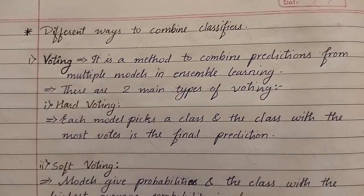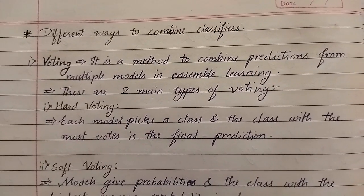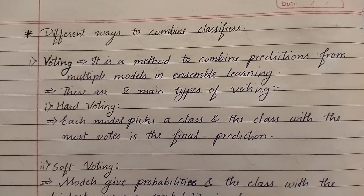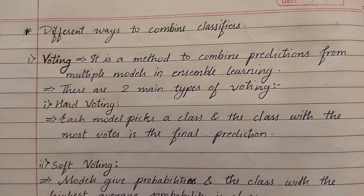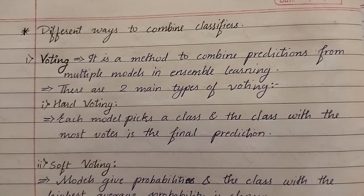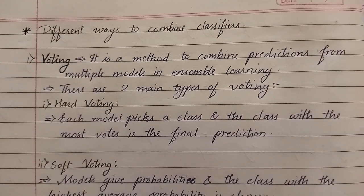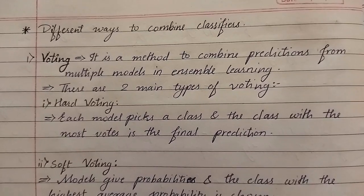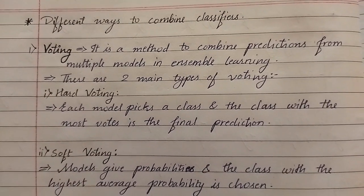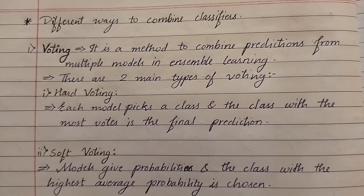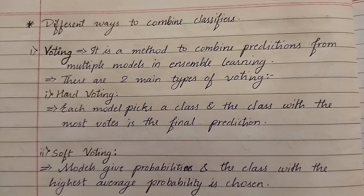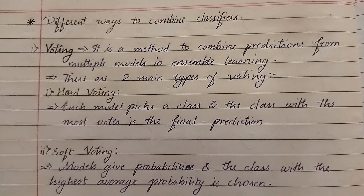There are two main types of voting. First is hard voting, where each model picks a class and the class with the most votes is the final prediction. Second is soft voting, where models give probabilities and the class with the highest average probability is chosen.